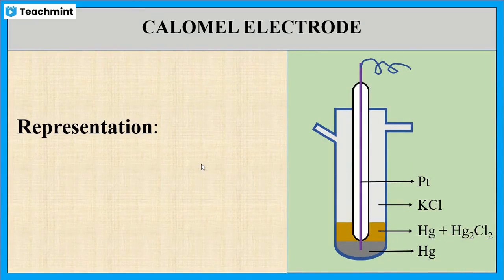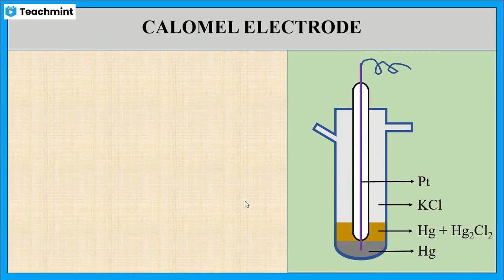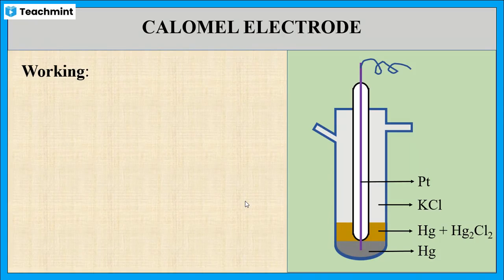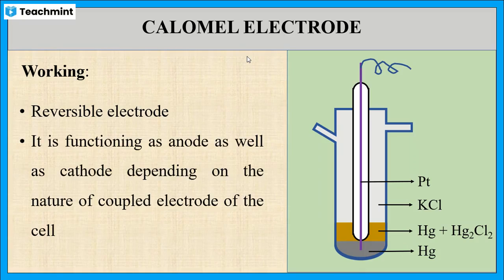This is the representation of the calomel electrode. Now let us see the working of the calomel electrode. We know any reference electrode is a reversible electrode, meaning it acts as cathode as well as anode. This calomel electrode is an example of a reference electrode, hence it is also a reversible electrode — it acts as cathode as well as anode depending on the nature of the other electrode.